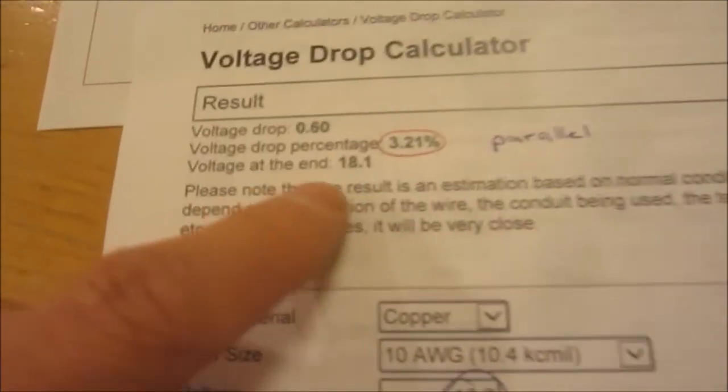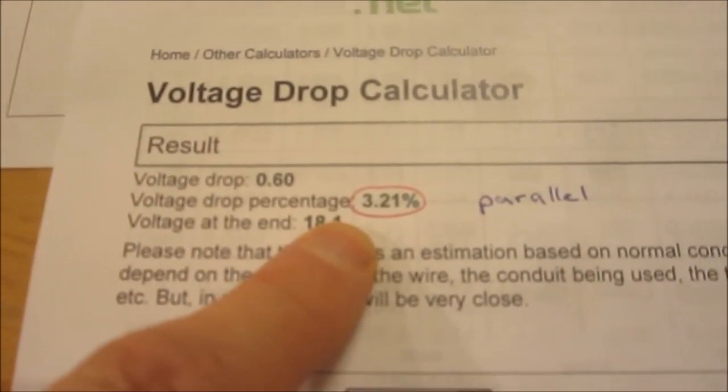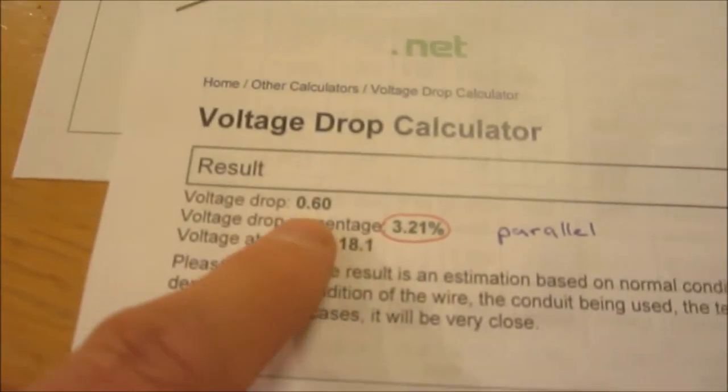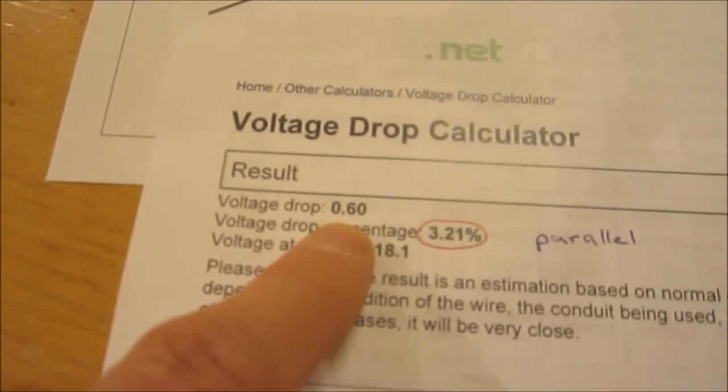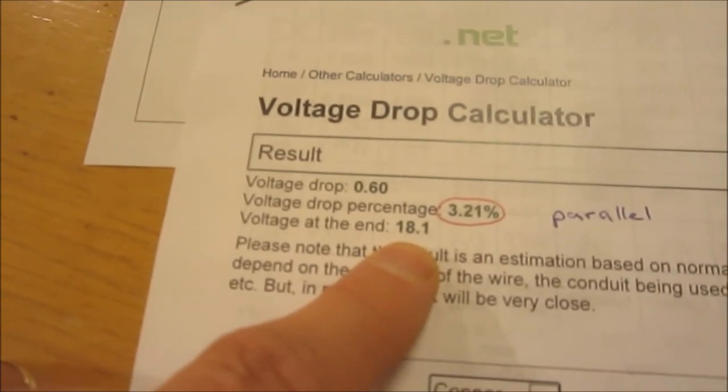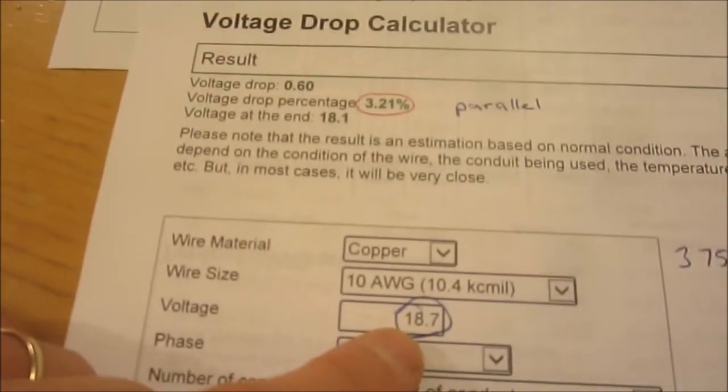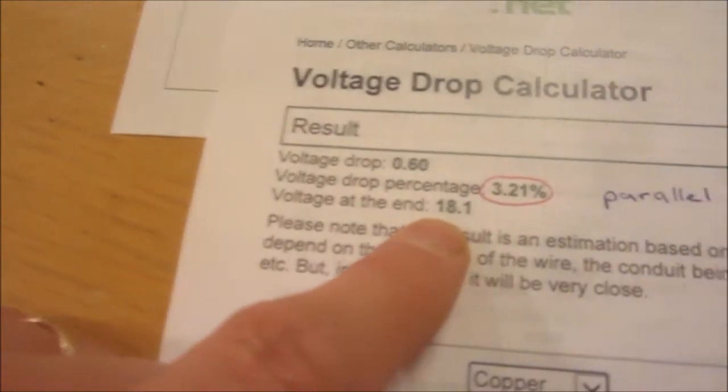That shows up that I'm going to have a voltage drop percentage of 3.21%, so I'm going to lose 0.6 volts. That's pretty sweet, I'm in a pretty sweet spot. And then at the output of that from the 18.7, I'm still going to be at 18.1. That's a pretty good deal.